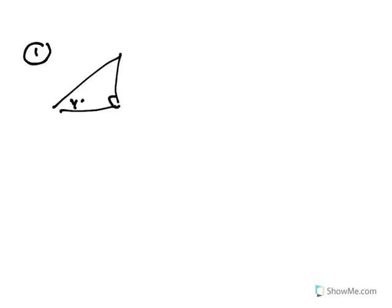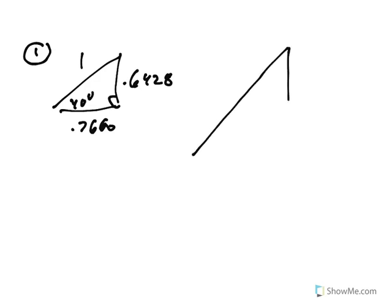I want to go through the practice test one question at a time. The first question: you were given a right triangle with a hypotenuse of 1 and a 40-degree angle, and the question was about a different triangle with a 40-degree angle and an adjacent side of 35.